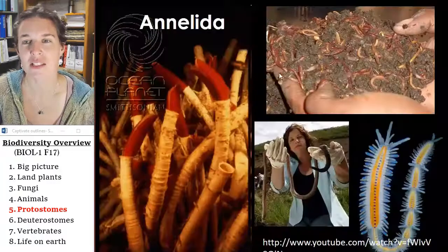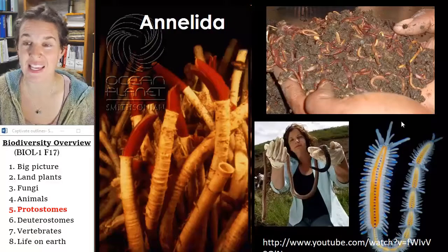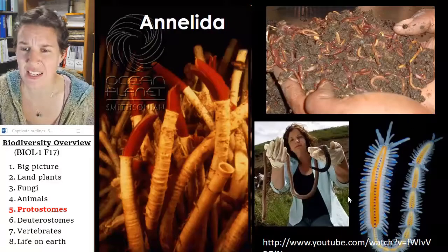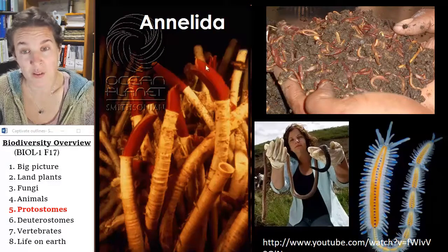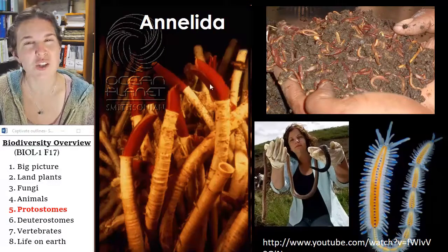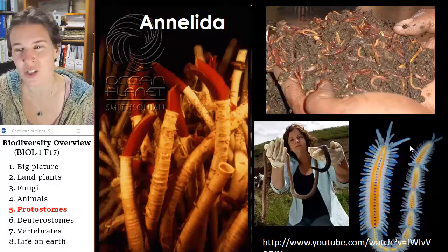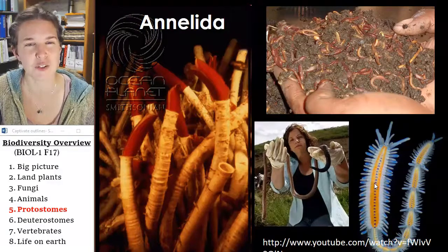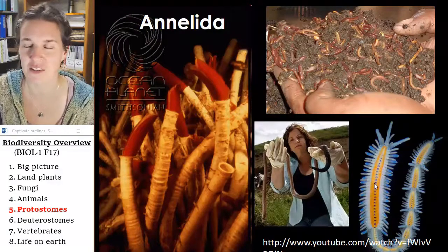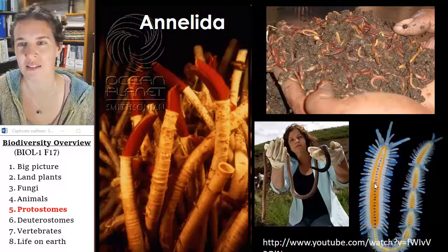Let's look at the annelids — segmented worms, great diversity. That's a freaking earthworm and it's huge. Earthworms are the most common. There are also tube worms in the ocean, and these really cool polychaetes that live in the ocean. Those are all annelids.